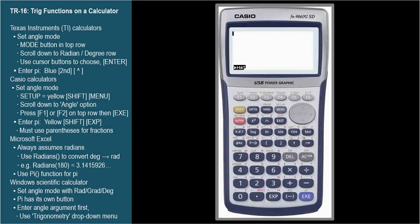For most Casio calculators, the degree radian mode is set with the Setup command, which is in yellow letters above the Menu button. So press the yellow Shift button and then the Menu button to activate the Setup feature.